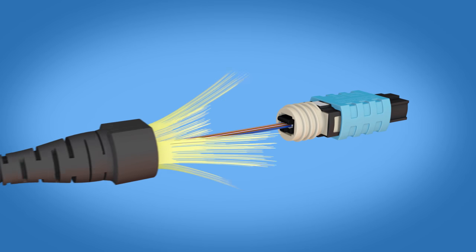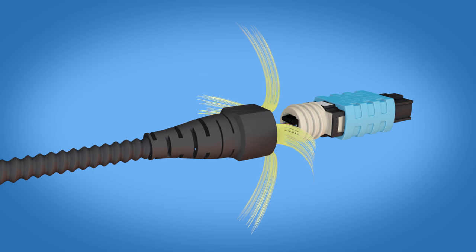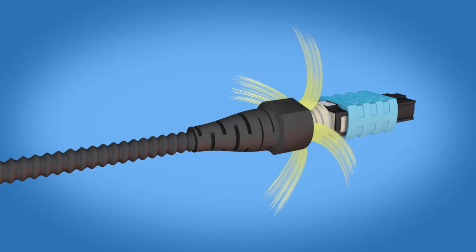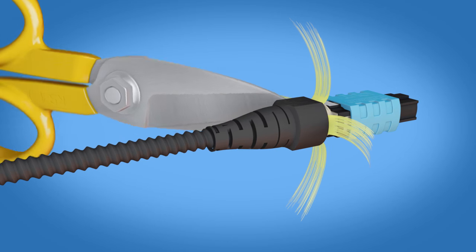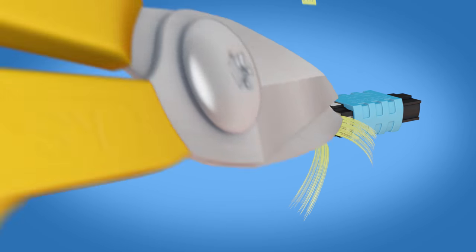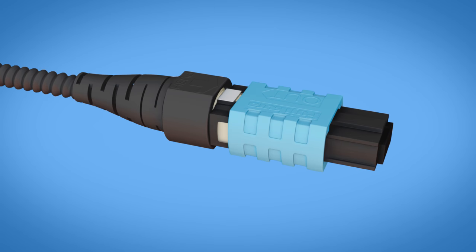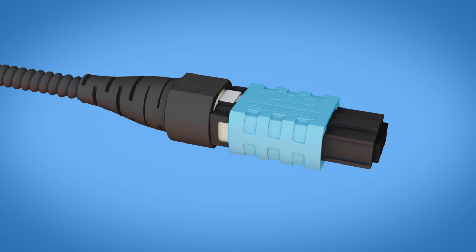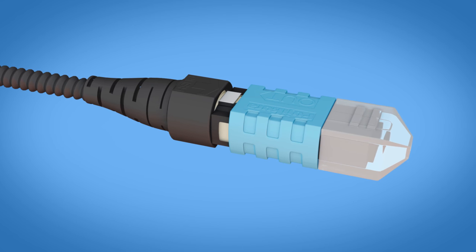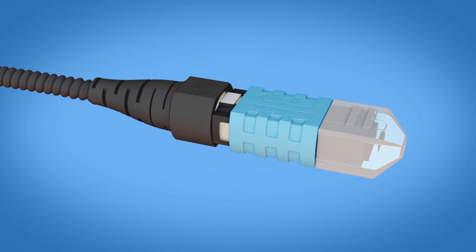Divide the aramid yarn on both sides of the spring unit. Screw the boot three quarters of the way onto the spring unit. Trim the excess aramid yarn using Kevlar scissors. Screw the boot unit on completely. Remove the cable clamp and place the dust cap back onto the connector. The installation is now complete.